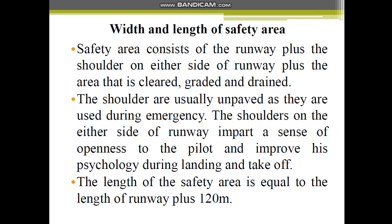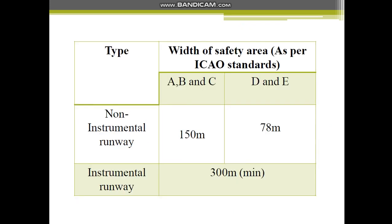The width of the safety area has different values. Going to this table, it gives the width of safety area as per ICAO. Knowing the type of airport — A, B, C, D, or E — for a non-instrumental runway, the width of the safety area is 150 meters, including the runway width plus the side shoulder. For types D and E on a non-instrumental runway, it is 78 meters. For an instrumental runway, for all types of airports, it is 300 meters minimum.